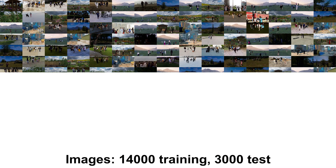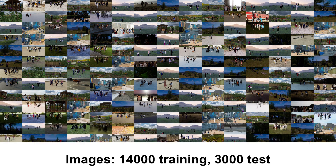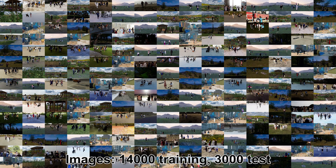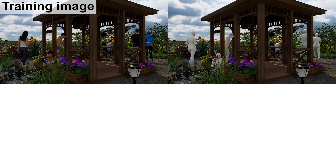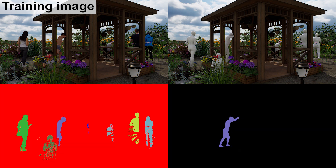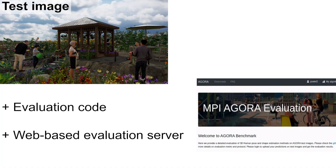We render around 14,000 training and 3,000 test images. We provide the training images with ground truth SMPL-X and SMPL bodies, as well as 2D segmentation masks. We provide test images without ground truth data, but with evaluation code and a web-based evaluation server.